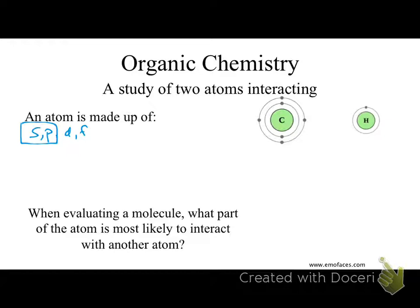We start with energy shell one, beginning with 1S. Once we're in that first energy shell, we can only have one orbital — it's stuck with the S orbital. We move to the next energy shell and we get 2S and 2P — that's as much as is mathematically and physically possible. Then we move to the next energy shell and we get 3S, 3P, and 3D.